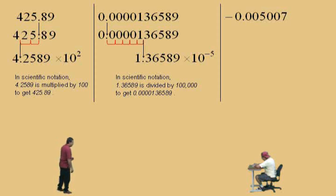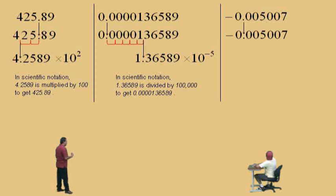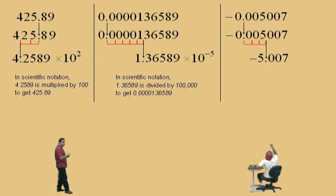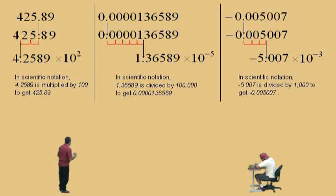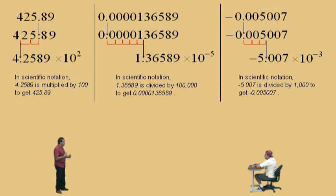Let's do another one: negative 0.005007. Here, we move that decimal to the right 3 times, because that gives us negative 5.007. Remember, the number just to the left of the decimal has to be 1 or greater than 1 but less than 10. We shifted the decimal 3 times, so to represent the decimal number we started with, we multiply by 10 to the negative 3. So negative 5.007 × 10⁻³ equals negative 0.005007.